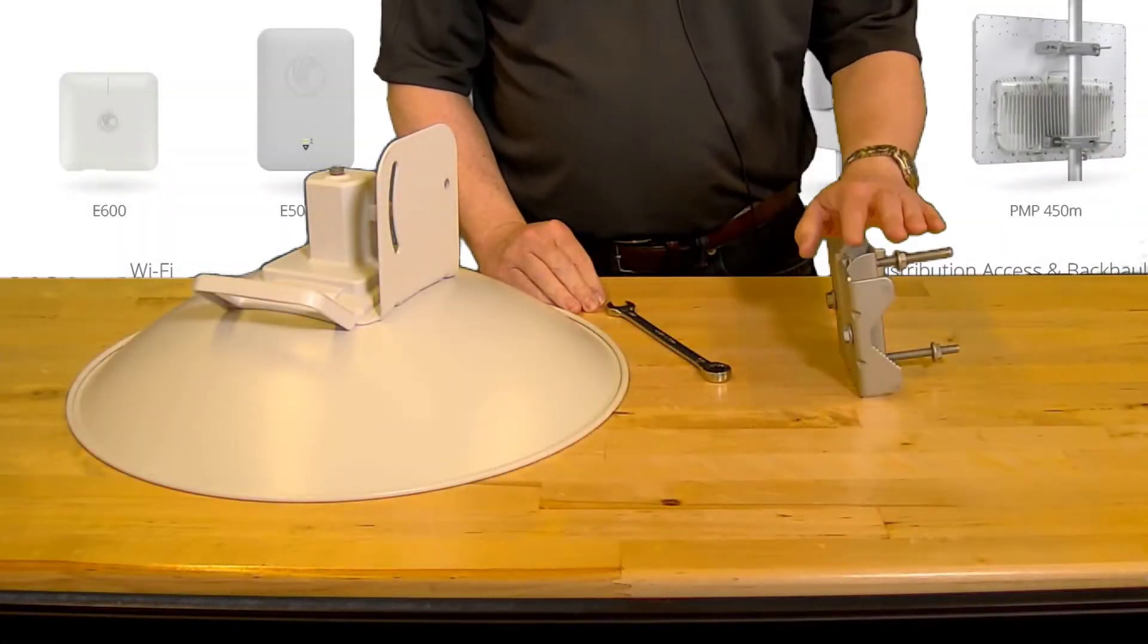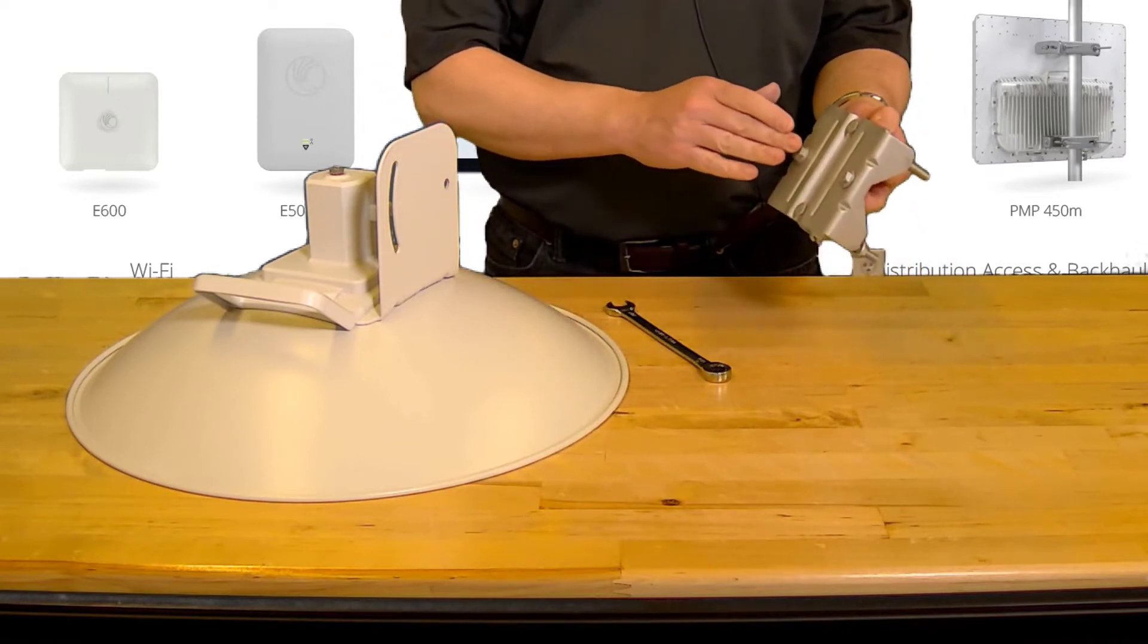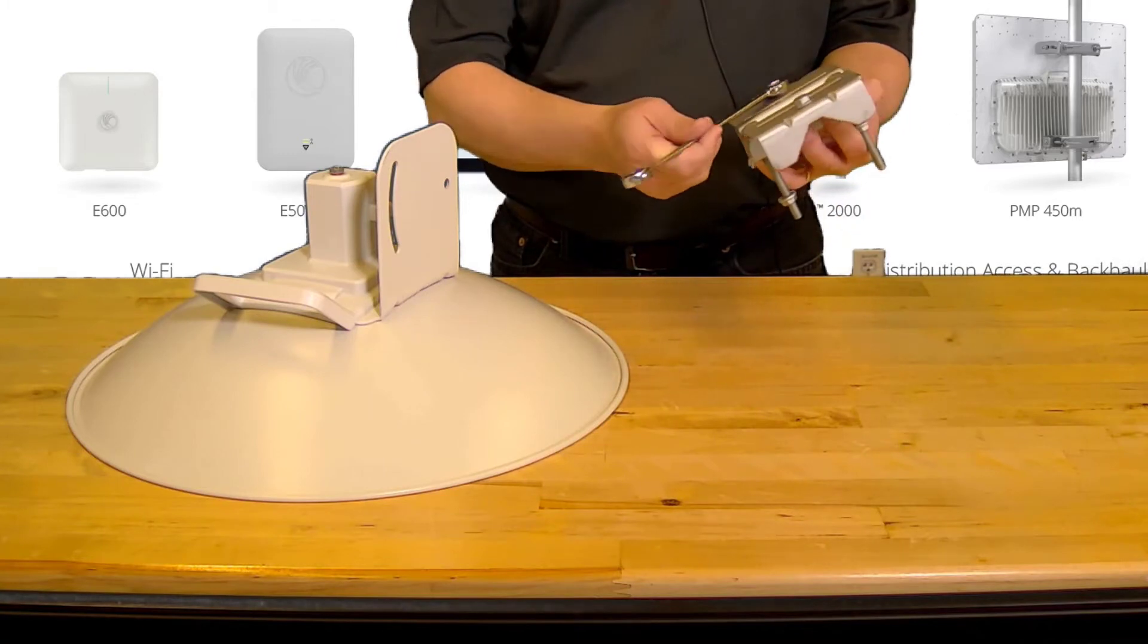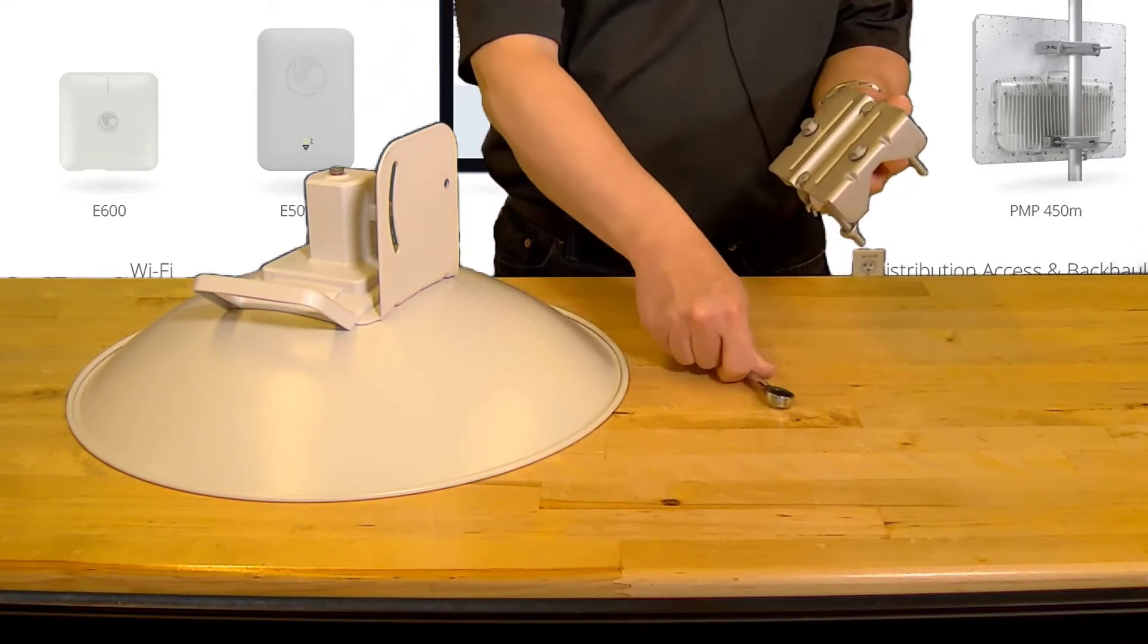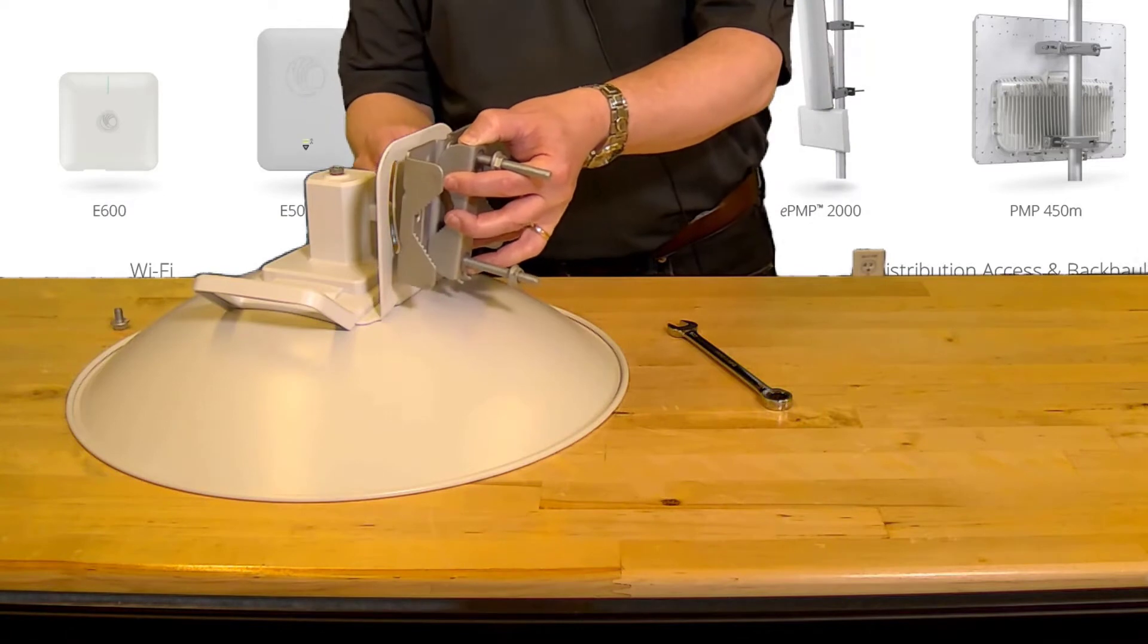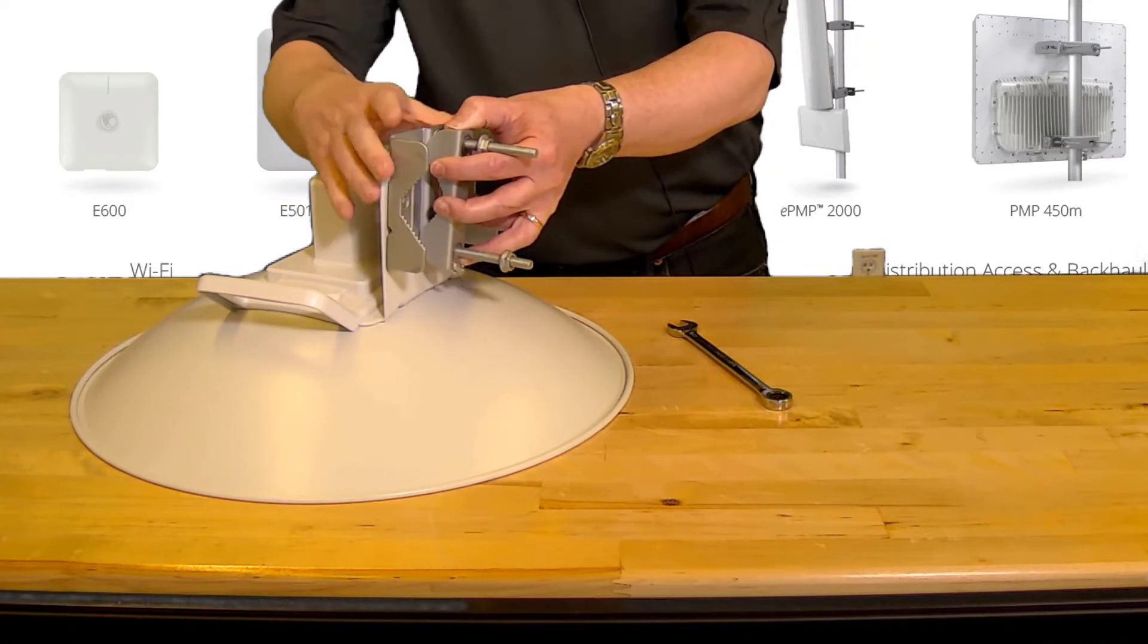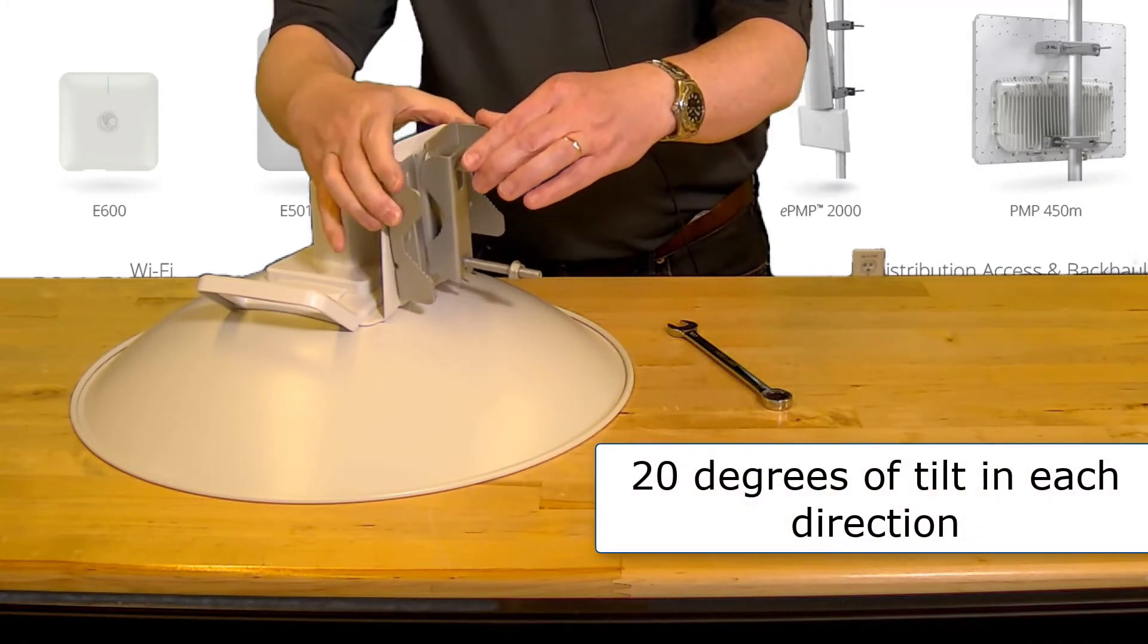Next we'll attach the pole mount bracket. Remove the two supplied M8 bolts from the bracket with a 13 millimeter wrench. Then align the pole bracket with the rear bracket and insert the bolts. The bracket is designed to allow up to 20 degrees of tilt in each direction.